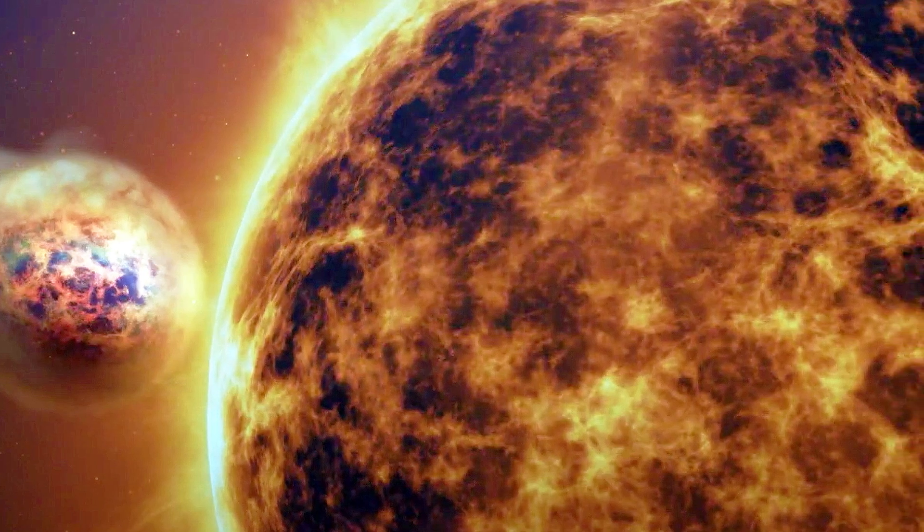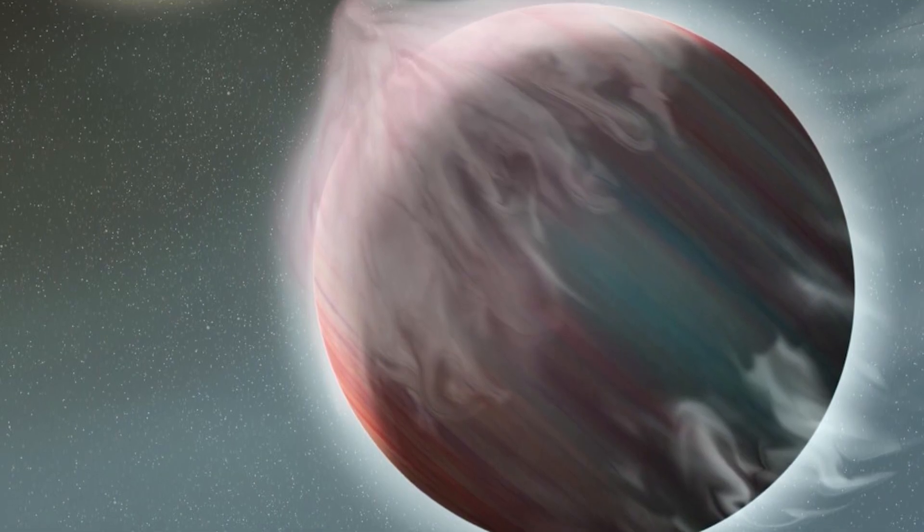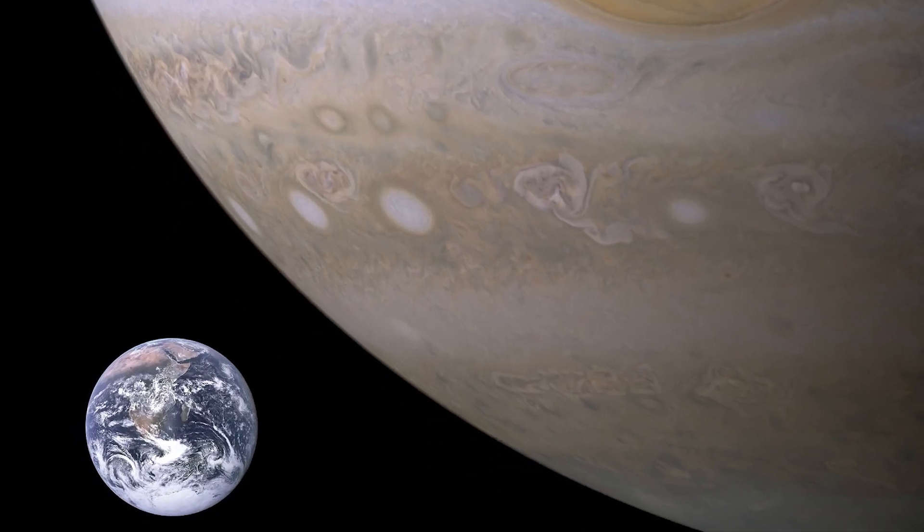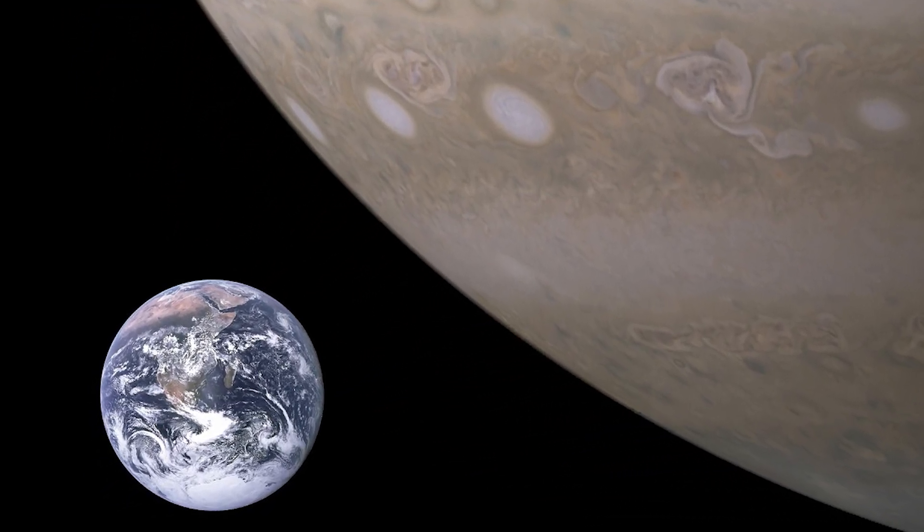The universe is filled with some truly strange planets that seem almost unbelievable. Take WASP-107b, for example. This odd planet is as big as Jupiter but weighs only 30 times more than Earth. Jupiter, on the other hand, is a whopping 300 times heavier than our home.